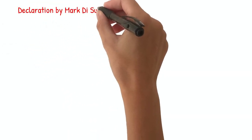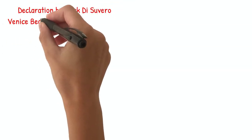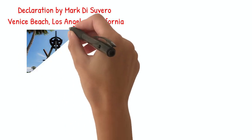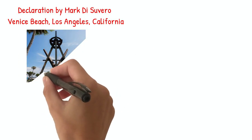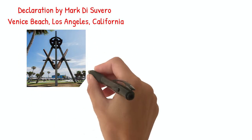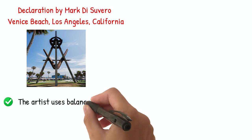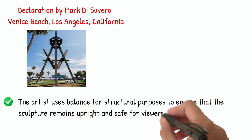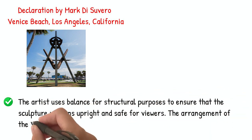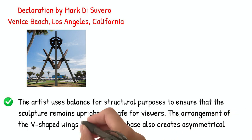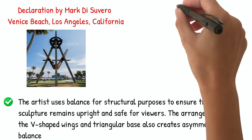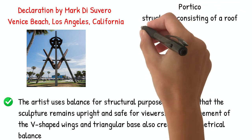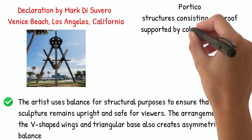One example of a famous sculpture is the Declaration by Mark D. Suvro, located at Venice Beach, Los Angeles, California. The artist uses balance for structural purposes to ensure that the sculpture remains upright and safe for viewers. The arrangement of the V-shaped wings and triangular base also creates asymmetrical balance.